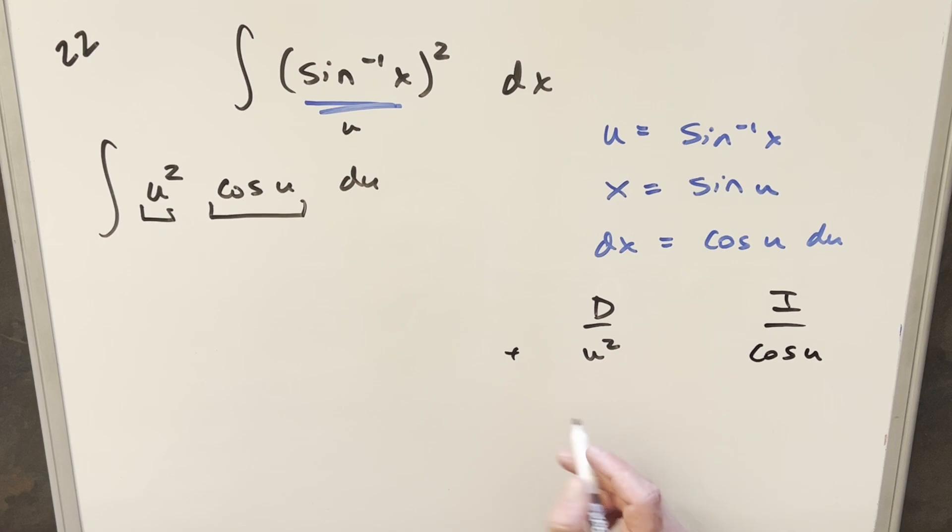So doing this, I'm going to want to differentiate this all the way down to zero. So doing it once, we're going to get 2u. Differentiate again, we get a 2. And then do it one more time. Derivative of 2 is just zero.